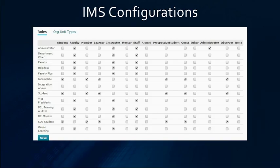In the IMS configuration page, you want to set up your admin roles as faculty, instructor, staff, and administrator. You will want to set up all of your faculty roles as faculty, instructor, and staff. You will want to set up any student roles as student, member, learner, prospective student, guest, and observer.